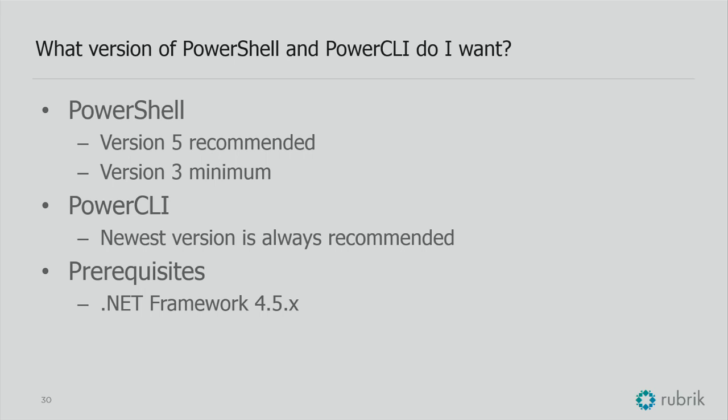PowerCLI 6.3 R1 is the current version and it goes all the way back to vSphere 5.0 for backward compatibility. You want to have the prereq of .NET Framework 4.5. If you run into any issues right off the bat once you install PowerCLI — yes, it is an installer — run your Windows updates because that's normally what's going to fix the issue. To install: download it, execute it, and even if you're upgrading it's the same process. During an upgrade it'll prompt you saying it's noticed you've already got a version and ask if you'd like to upgrade.